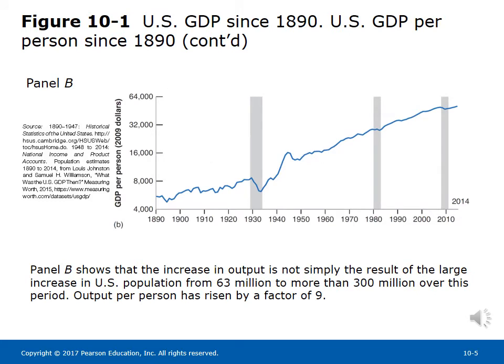Figure 10-1 Panel B illustrates U.S. GDP per person since 1890. It shows that the increase in output is not simply the result of a large increase in U.S. population, which grew from 63 million to more than 300 million over this period. Output per person has risen by a factor of 9.